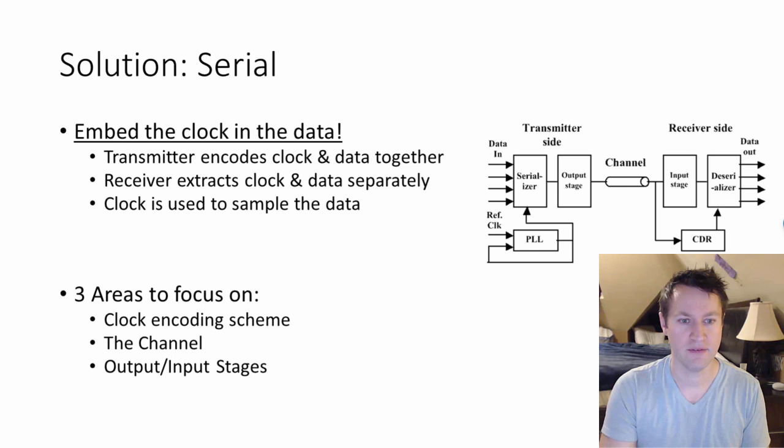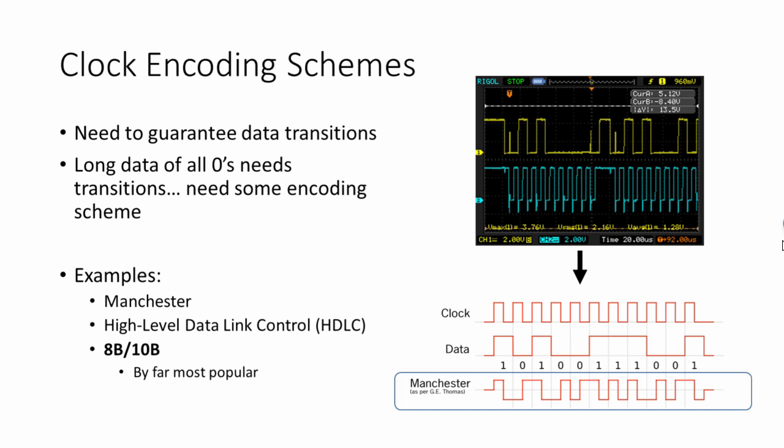Let's talk about the clock encoding scheme. You need to guarantee data transitions along a long set of zeros and ones—need some transitions. You can imagine if you want to send like 128 bits of all zeros, you're going to eventually lose—your receiver's not going to know when to sample the data. So you have to introduce some transitions into even long data streams. You have to introduce transitions so that your receiver can know, 'okay, there's an edge, I'm going to resynchronize to that new edge now.' And if those are too far apart, it falls apart, it doesn't work.